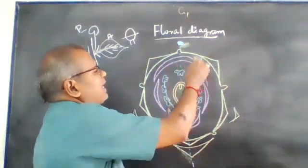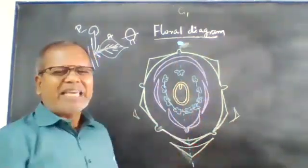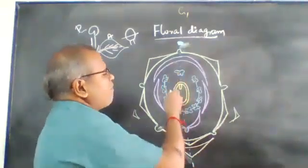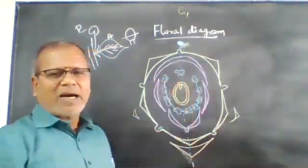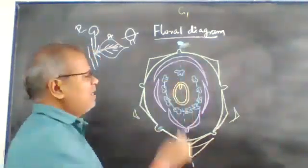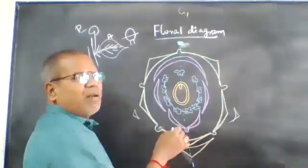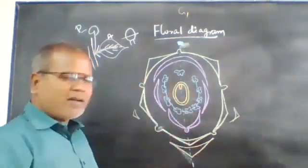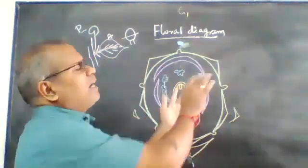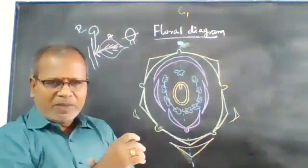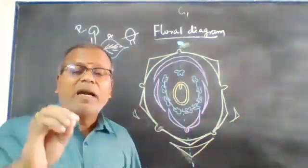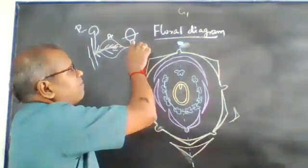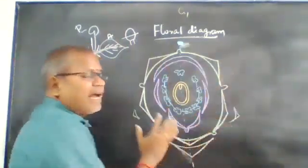This is a descendingly imbricate aestivation. Diadelphous stamens. Gynoecium with marginal placentation. This is the floral diagram — the diagrammatic representation of floral parts present in the flower bud is said to be the floral diagram.